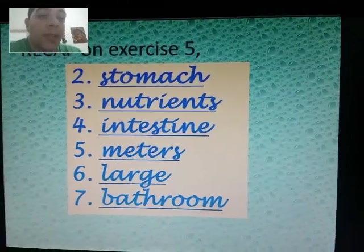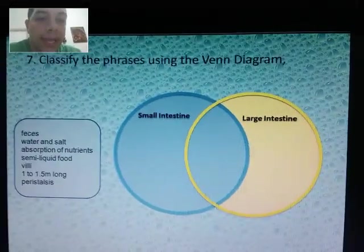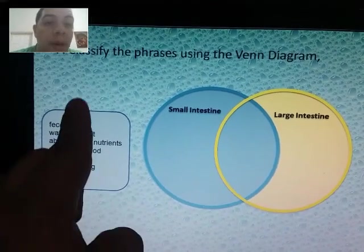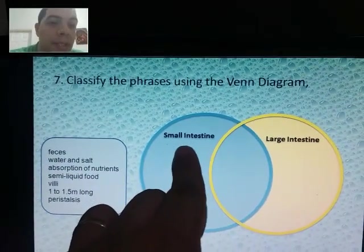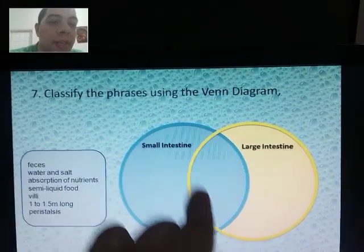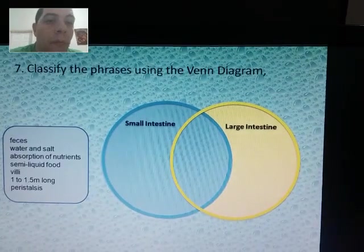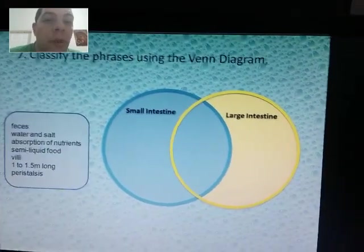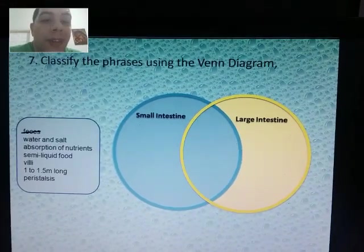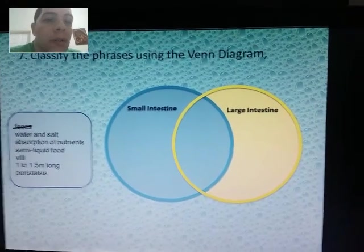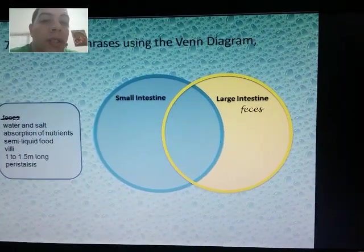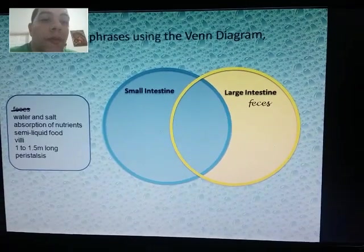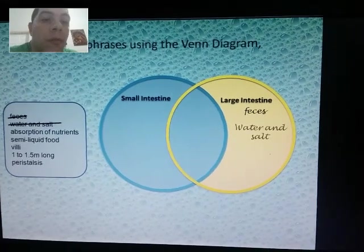Let's move on and work on exercise number seven. You have the possible answers that go into a Venn diagram showing characteristics of the large intestine, characteristics of the small intestine, and characteristics shared by both in the middle. I'll cross out answers as I use them. Feces — which intestine does that belong to? The poop — that's part of the large intestine. Water and salt — that's also in the large intestine.